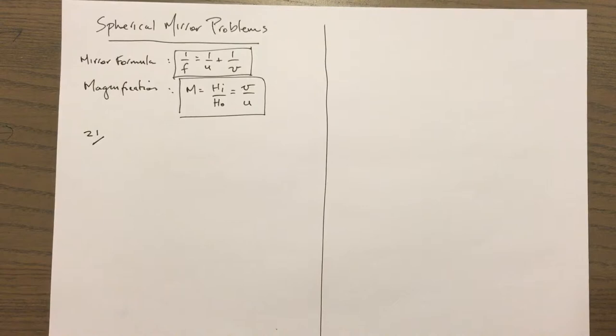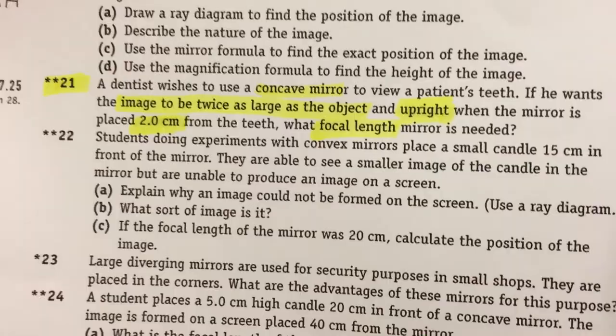Alright, here we go. So question 21 is what we're going to do today. It's on page 397 of chapter 17. It's a two-star question, so there's a level of difficulty, but it's not too bad.